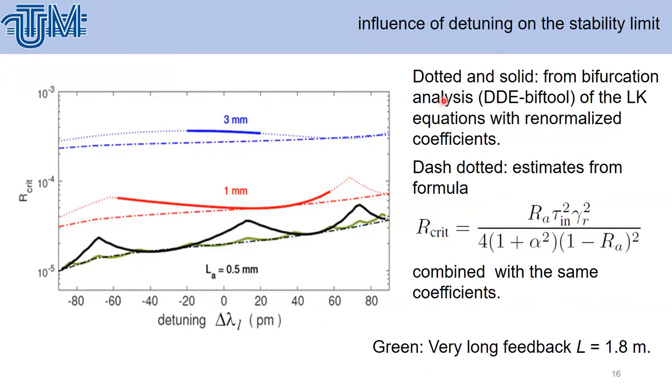In this figure, we look for the influence of detuning on stability limits. We compare the dotted and solid lines from bifurcation analysis using DDE-BIFTOOL of the Lang-Kobayashi equations with renormalized coefficients, and dash-dotted is estimated from the previous formula. In some range there is very good agreement between the two theories.